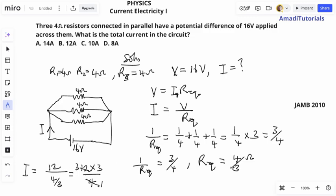Sorry, this wasn't supposed to be 12. Our V is 16. So this here is 16. Sorry for that mistake.